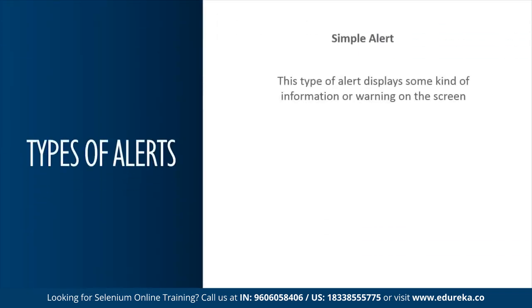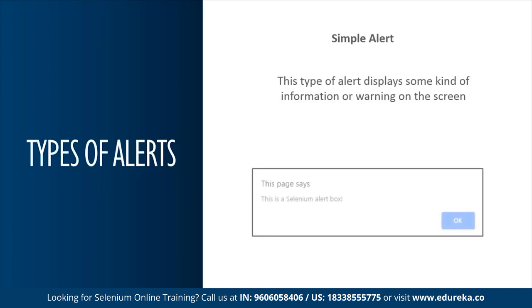First, we'll see what is a simple alert. This simple alert displays some information or a warning on the screen. For example, you get an alert while testing warning you to fill a particular section, and there is a button which helps in closing the alert message. This is how a simple alert looks like.